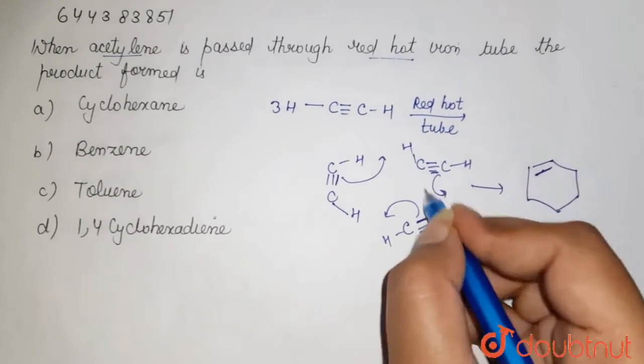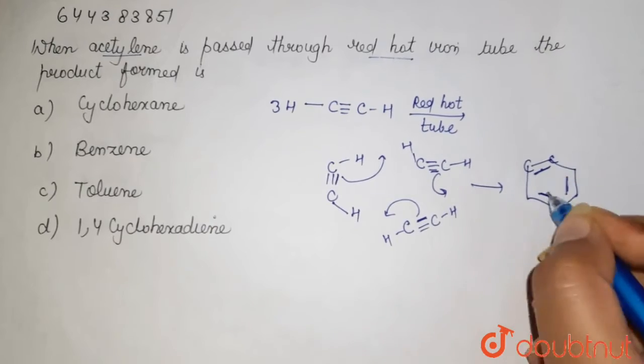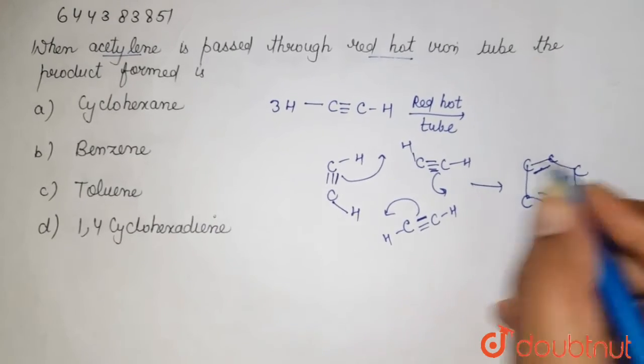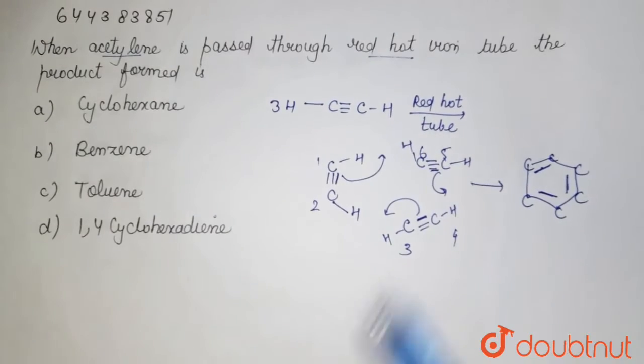This bond will come like this, this will here, and this will come over here. These are your carbon atoms: one, two, three, four, five, and six. Here it is one, two, three, four, five, and six between.